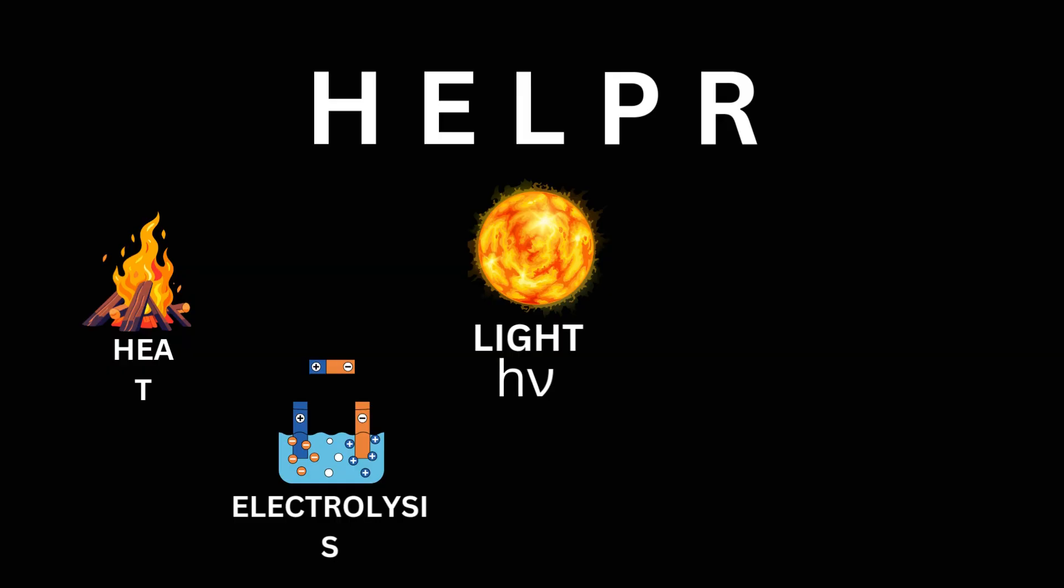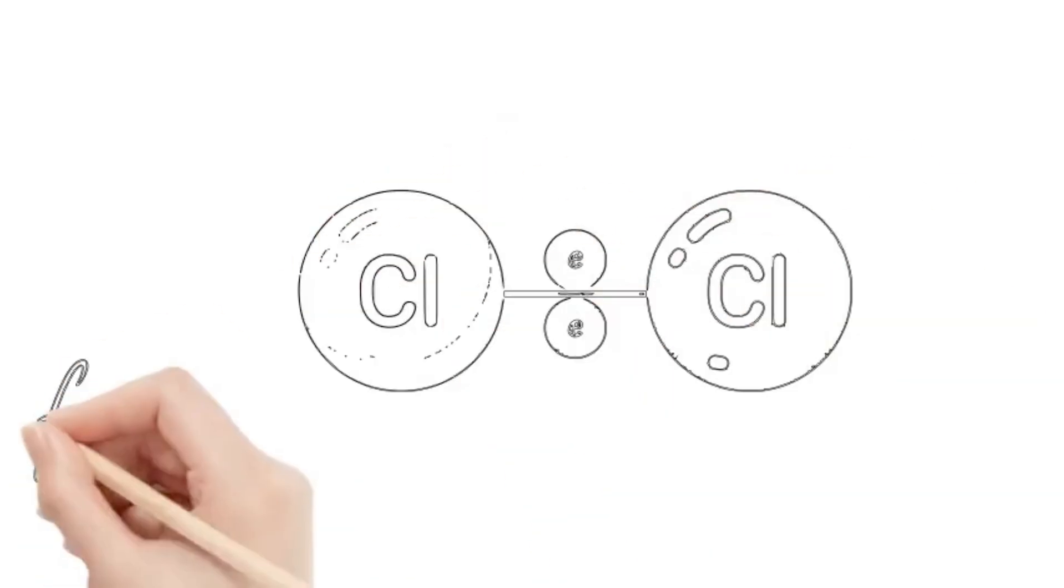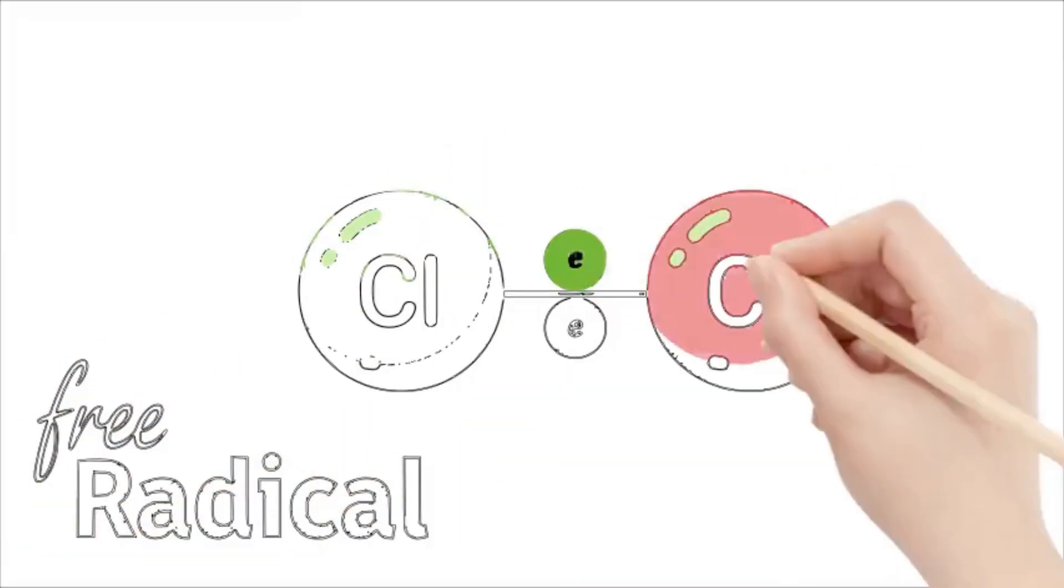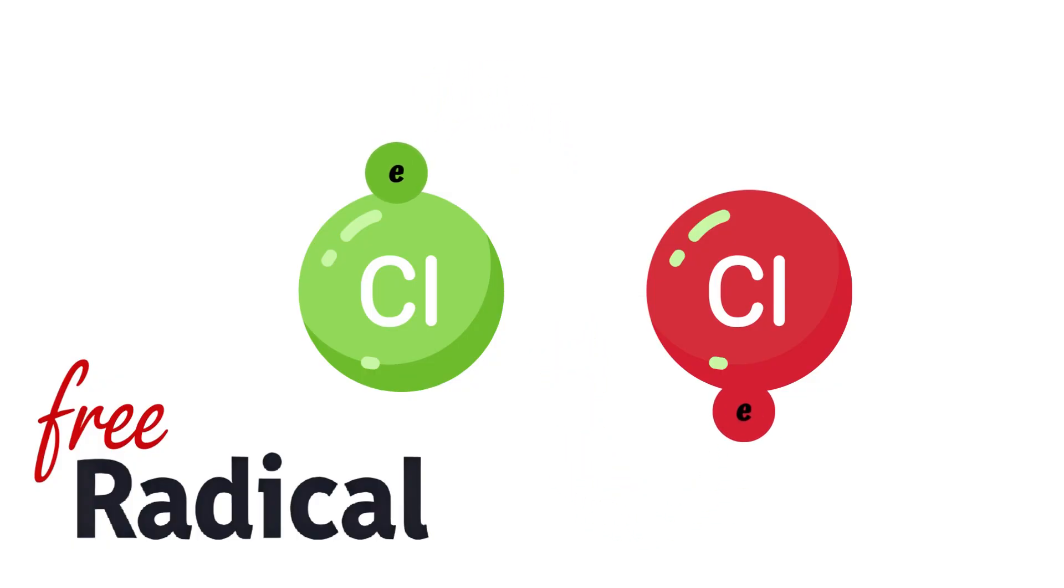Helper is an abbreviation: H stands for heat, E stands for electrolysis, L stands for light, P stands for peroxide, R stands for radical. We use these five energy sources to break down such pure covalent bonds and both atoms take away their electron. So, there is no charge on any of the atoms and free radical is formed.